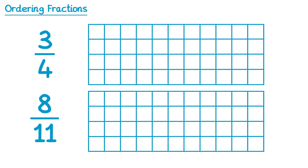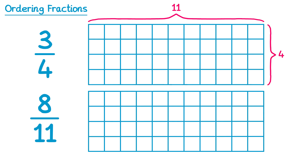You can now see we've split both of the bars into equal size squares. If we count along the top there are 11 squares, and along the side there are 4 squares, so we can do 11 times 4 to get 44 total squares, all the same size. Now we can still shade in 3 quarters of the original bar by shading 3 horizontal strips, and shade in 8 elevenths of the second bar by doing 8 vertical strips.